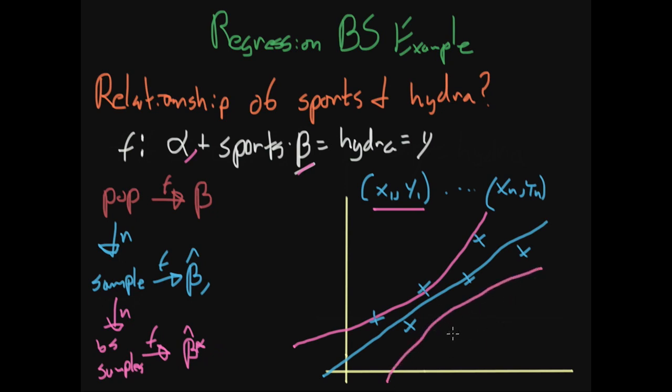When we ask somebody how many hours of sports they play, they might say three, which puts them somewhere here on the line. Instead of giving them a single point estimate for hydration, we can give them a bound, a confidence interval, based on the confidence interval we got from beta star. I hope you found this pretty cool.